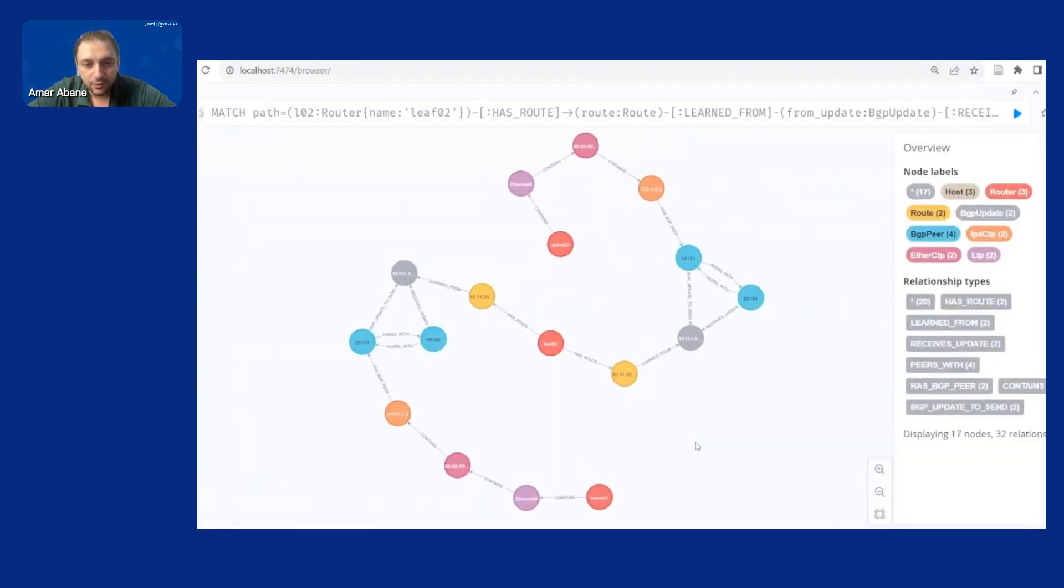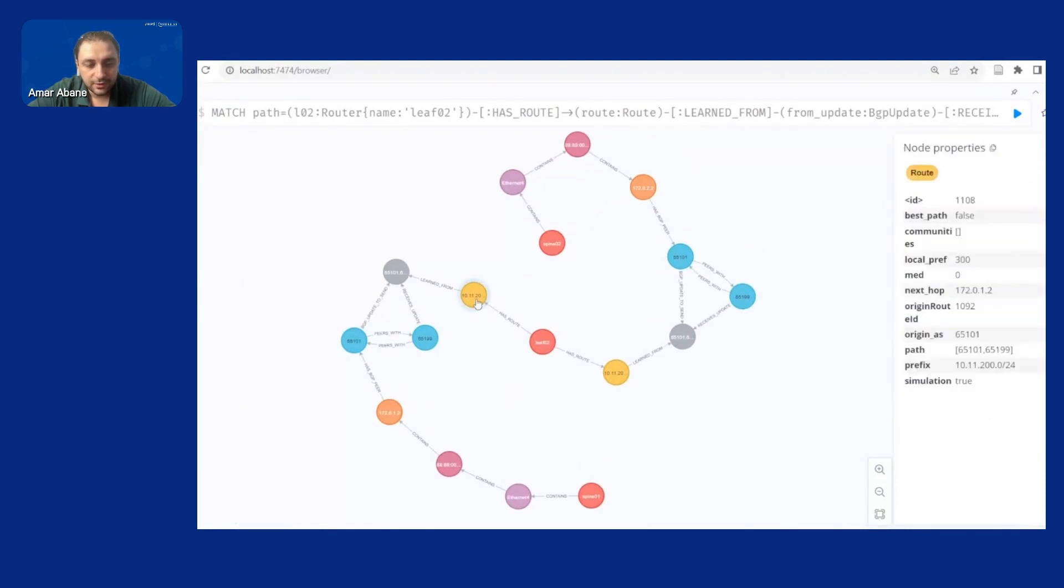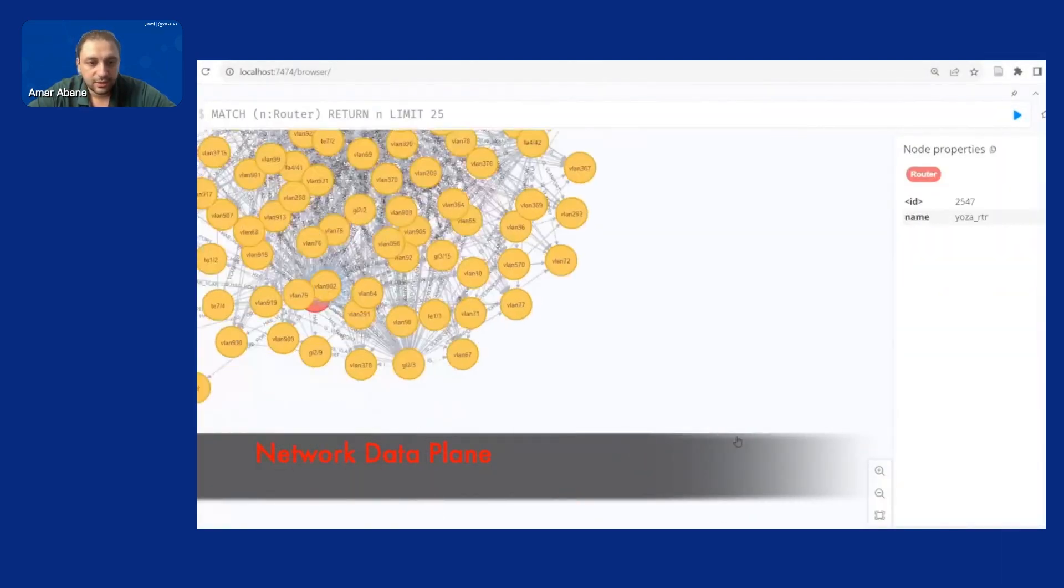And we can even see the whole path from the origin announcement to the route installed in the network we get every detail of the process of BGP and again this is the same repository that has the network state in real time so we can directly check these.